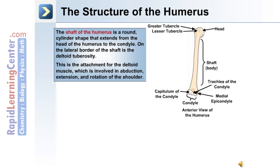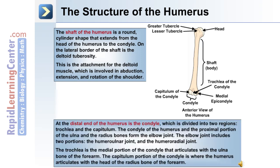The shaft of the humerus is a round cylinder shape and extends from the head of the humerus to the condyle. On the lateral border of this bone is the deltoid tuberosity, and this is the attachment for the deltoid muscle, which is involved in abduction, extension, and rotation of the shoulder. At the distal end of the humerus is the condyle, divided into two regions: the trochlea and the capitulum.